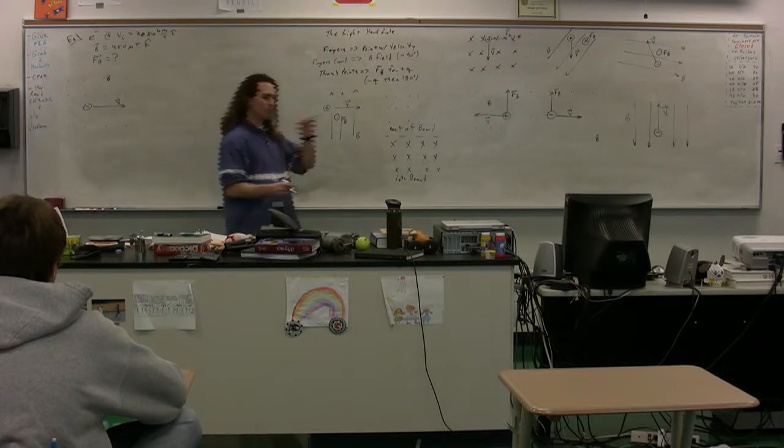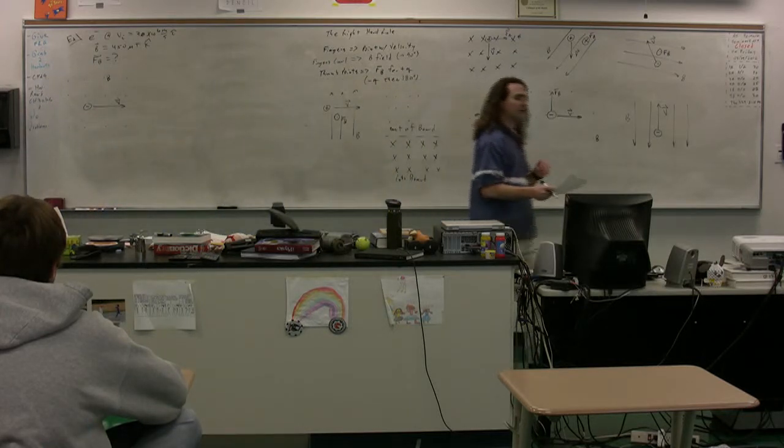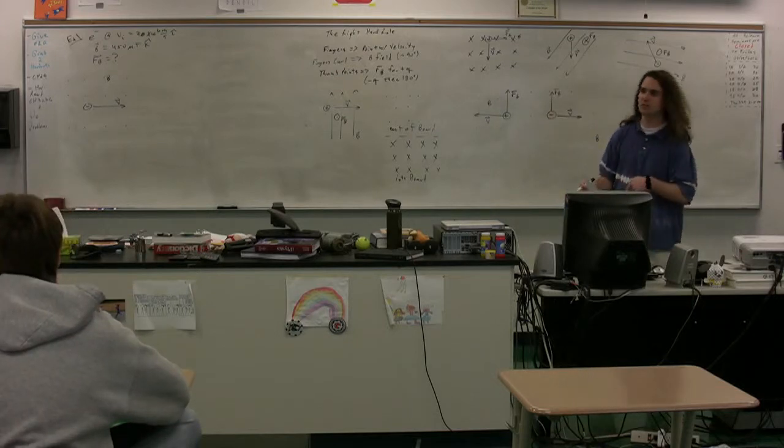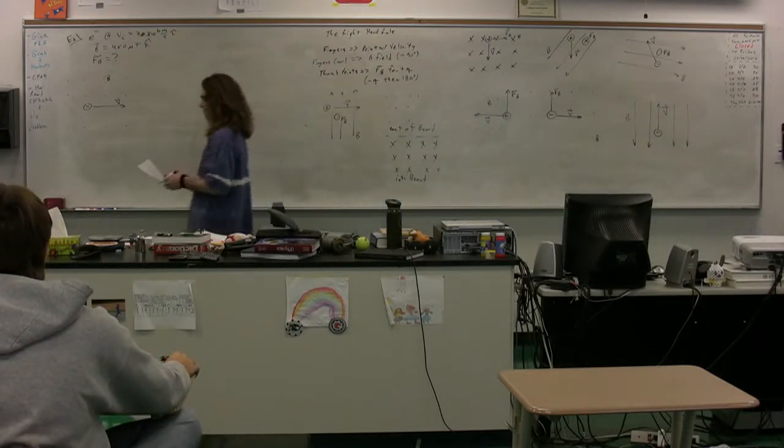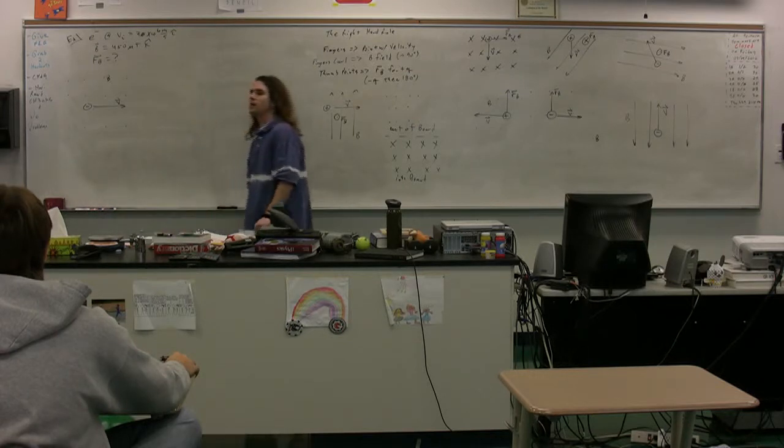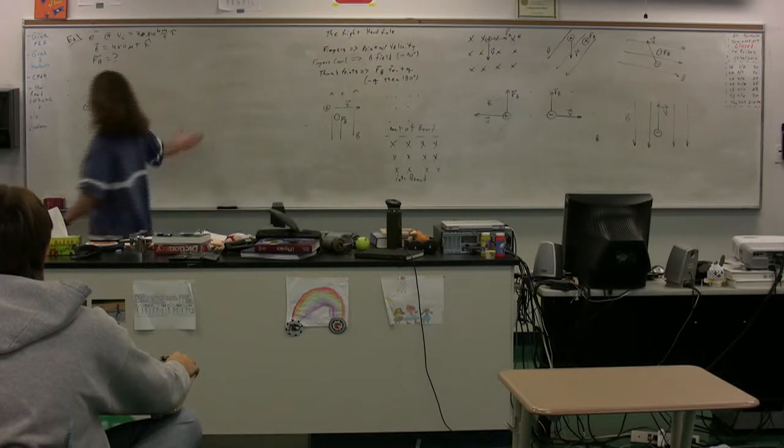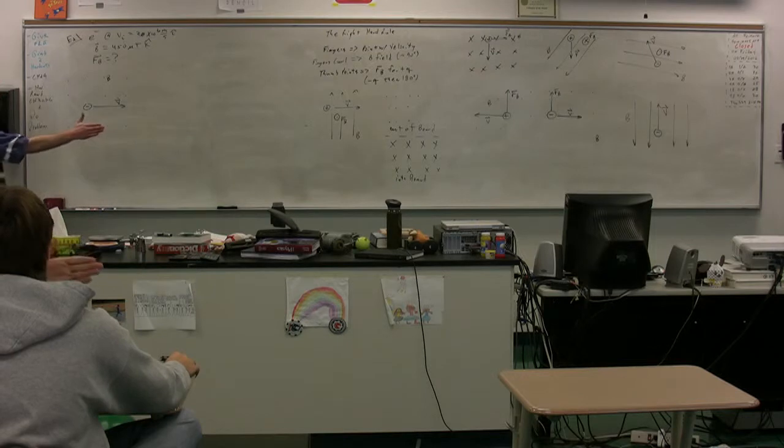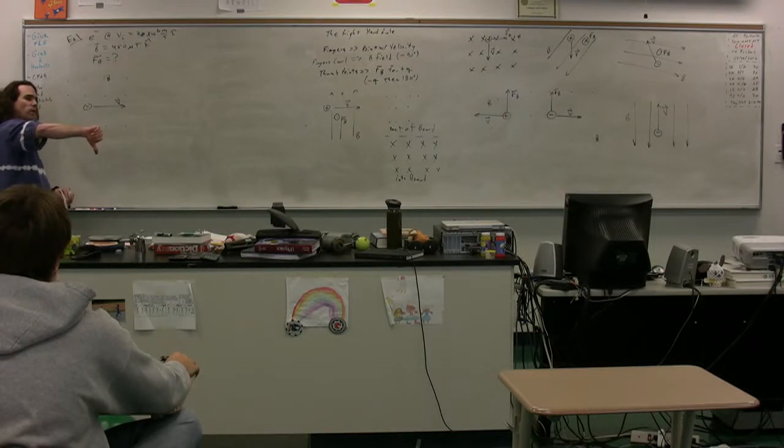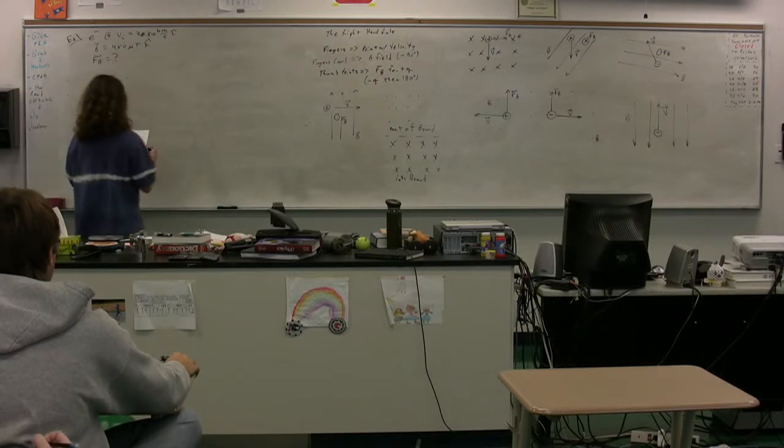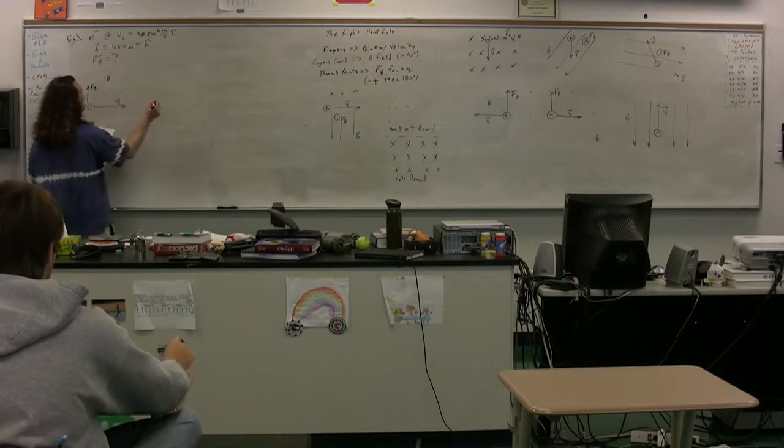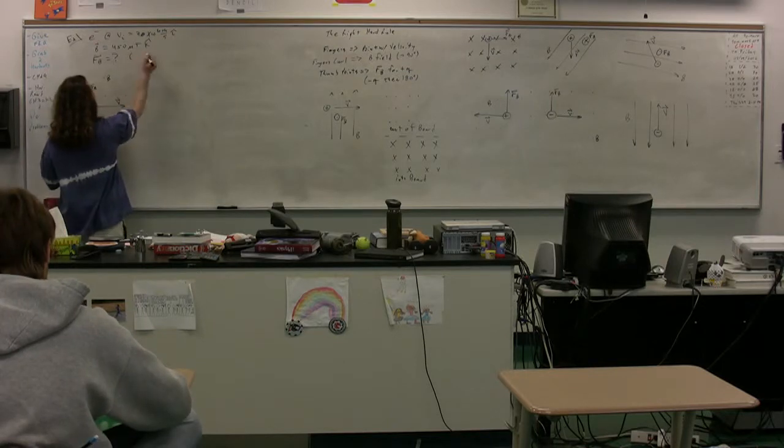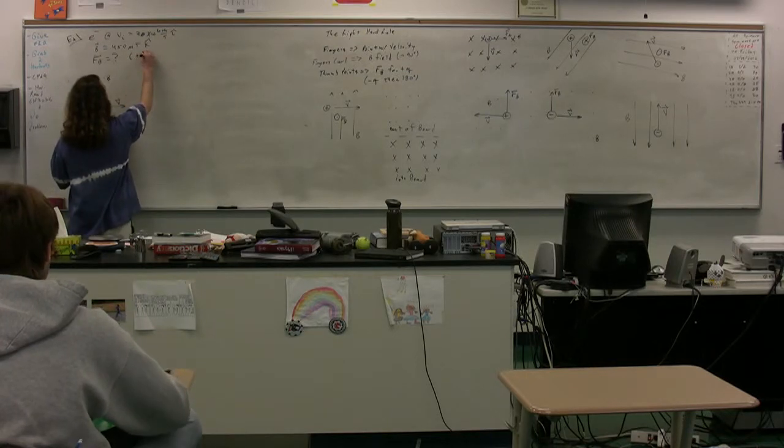So let's just do the right hand rule to figure out the direction of the magnetic force, and then we'll use the cross product to show that it works. Travis, walk me through the right hand rule here. Point to the right for velocity, curl them out of the board, and then you're pointing down and you have to switch that 180 because it's negative. Therefore the magnetic force is going to be, we should get the magnetic force in the positive j direction.